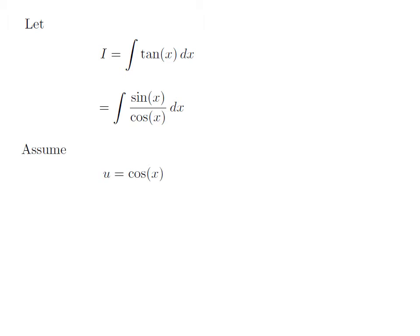We will solve this integration by substitution method. Assume u is equal to cosine of x. Taking differentiation of both sides, we get differential of u is equal to the differentiation of cosine of x with respect to x into differential of x. As differentiation of cosine of x with respect to x is equal to minus sine of x, so differential of u is equal to minus sine of x into differential of x.